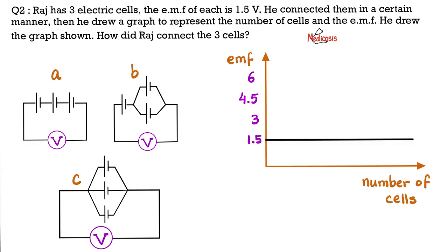Here is another question for you. Raj has three electric cells. Here is one, two, and three. The electromotive force of each one of them is 1.5 volts. He connected them in a certain manner. Then he drew a graph to represent the number of cells and the electromotive force.